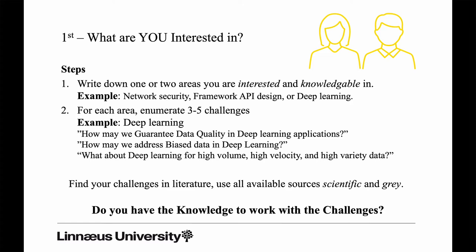Once you have an area, start looking into it, primarily by checking out different sources in the literature. Of course you have scientific literature, which is important in this context, but you also have what people refer to as gray literature — non-peer-reviewed literature such as blogs, white papers, articles, and web pages. Pick an area and start digging into the sources. Scientific ones can be found in library databases or Google Scholar; for gray ones, just search the web.